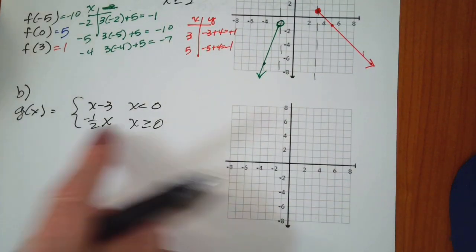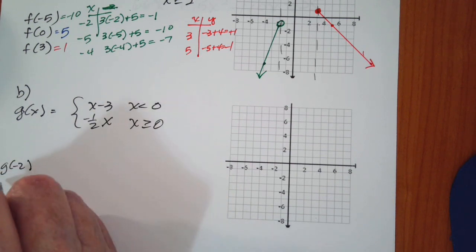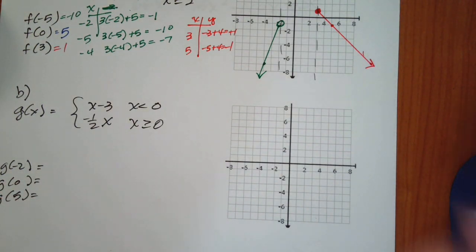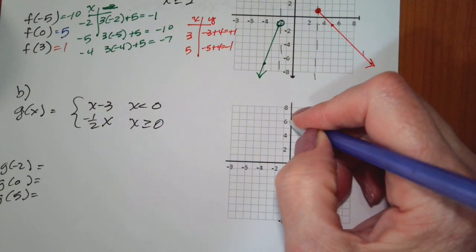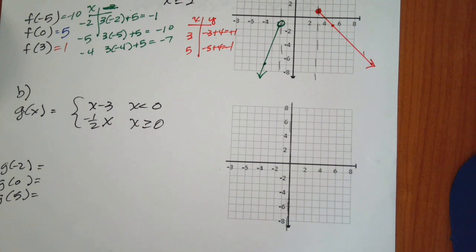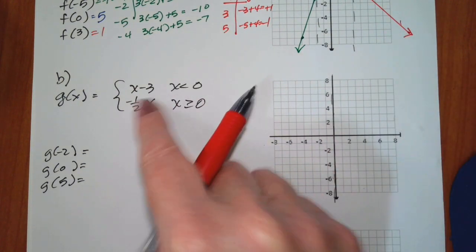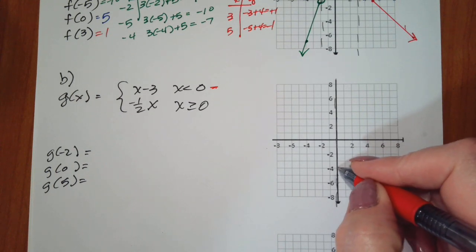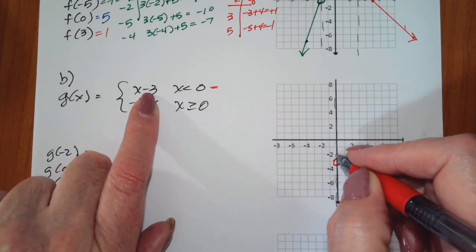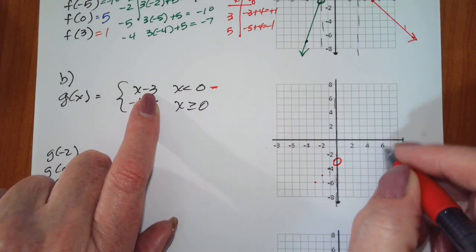For the next one, we only have two functions. We have to find g of negative 2, g of 0, and g of 5. The only boundary we have is where x is equal to 0, so we've got a separate function on each side. Since it's 0, I can use slope-intercept form. For this function, my y-intercept is negative 3, but it does not include that point. With a slope of 1, I go up 1 over 1, or equivalently down 1 over 1.